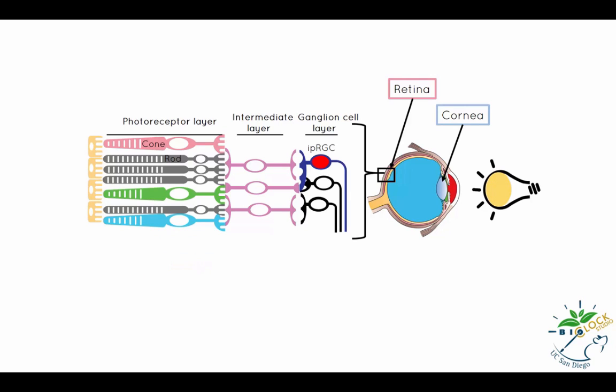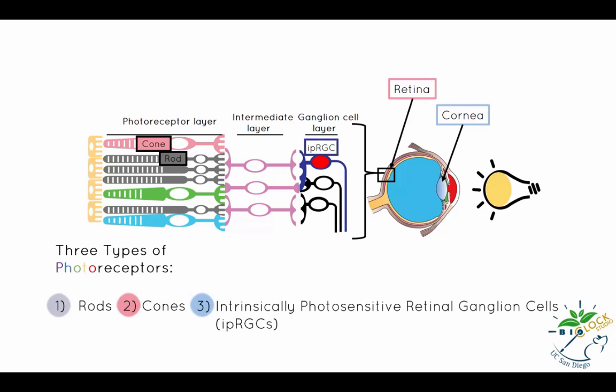The retina senses light through three types of photoreceptor cells: the rods, the cones, and the intrinsically photosensitive retinal ganglion cells, referred to as the IPRGCs.